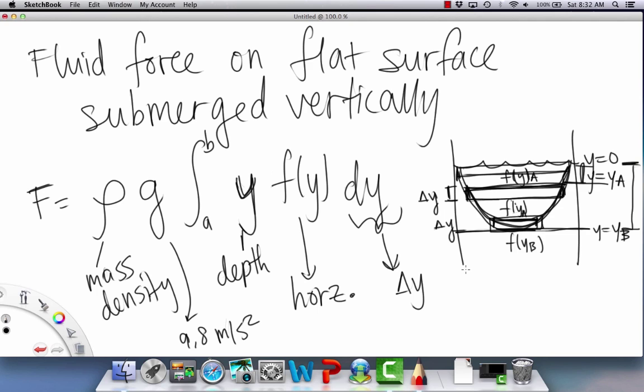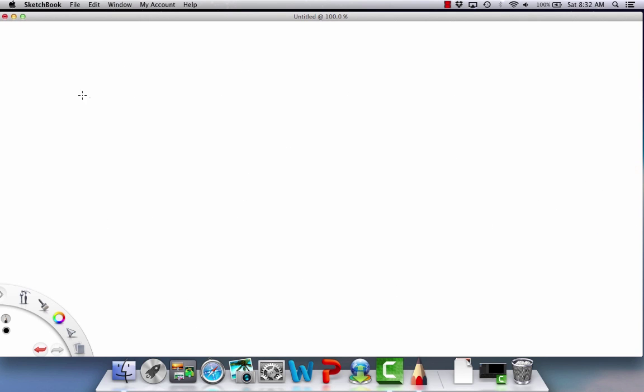Alright, so let's do a quick example of this. Let's say we're given the following: we have our water level, so this is y equals zero, and then we have some kind of triangle down here.